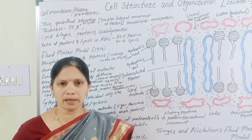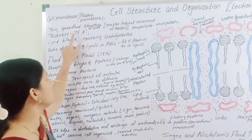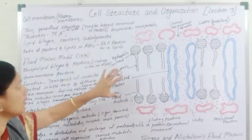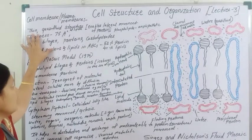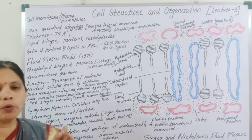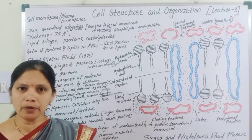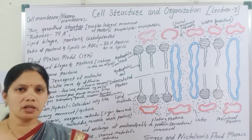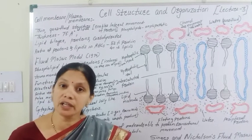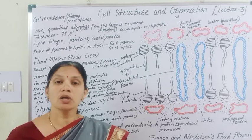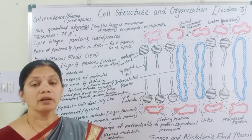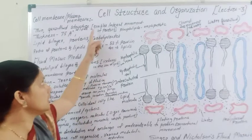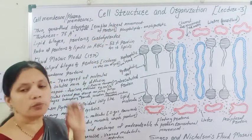The plasma membrane is formed from the phospholipid bilayer. If you observe the structure of the cell membrane, it is a quasi-fluid phospholipid bilayer. Quasi-fluid means the plasma membrane is partially solid and partially liquid. This quasi-fluid nature enables the lateral movement of proteins.